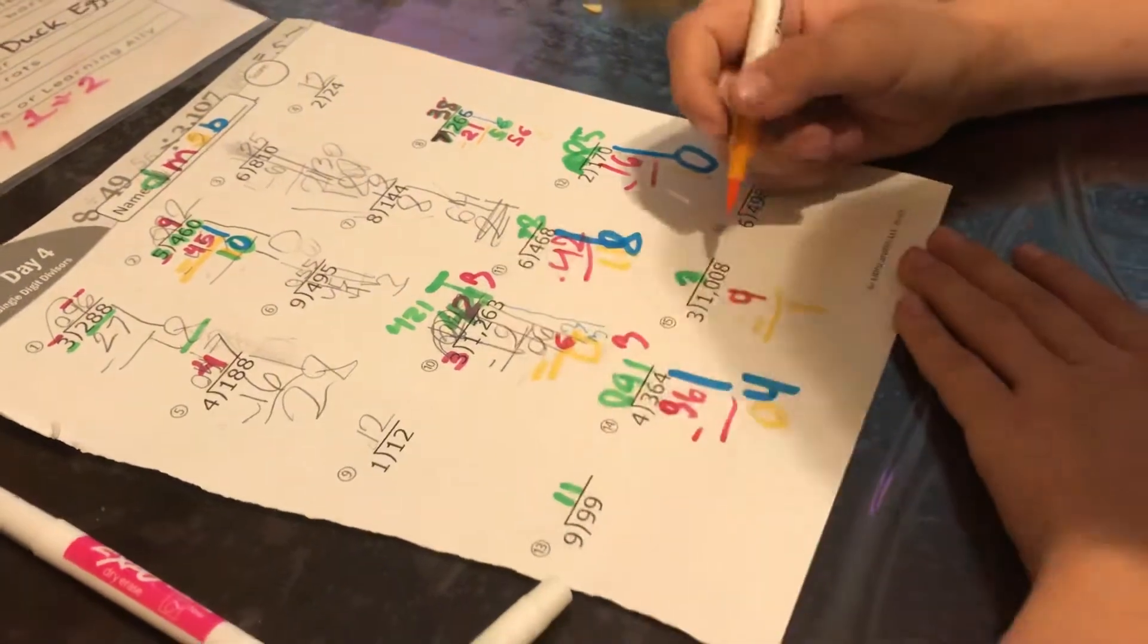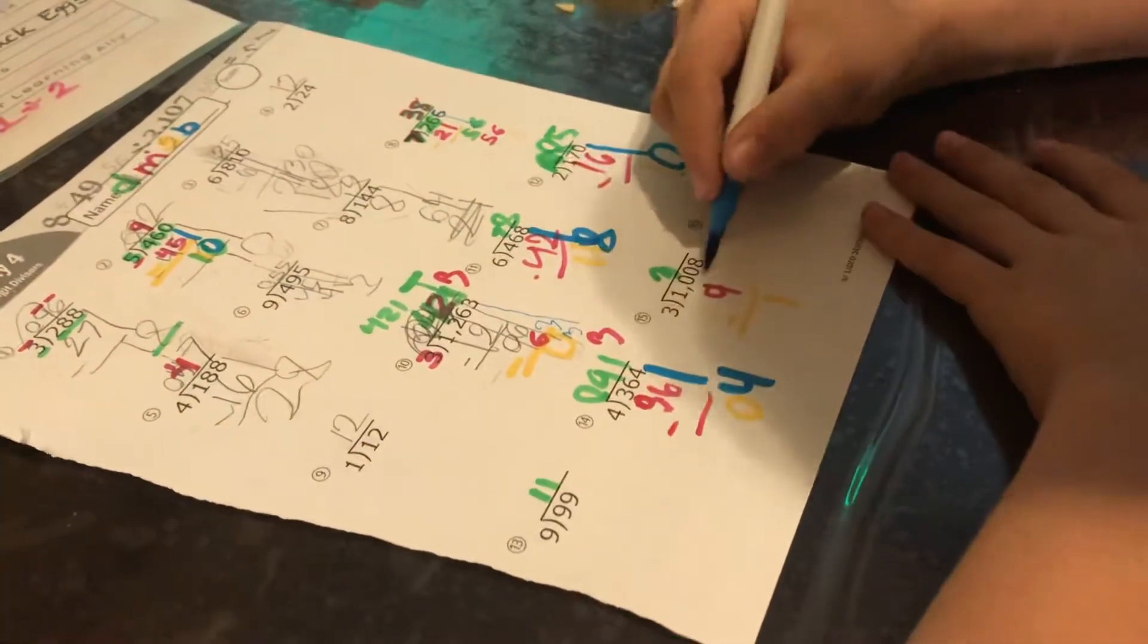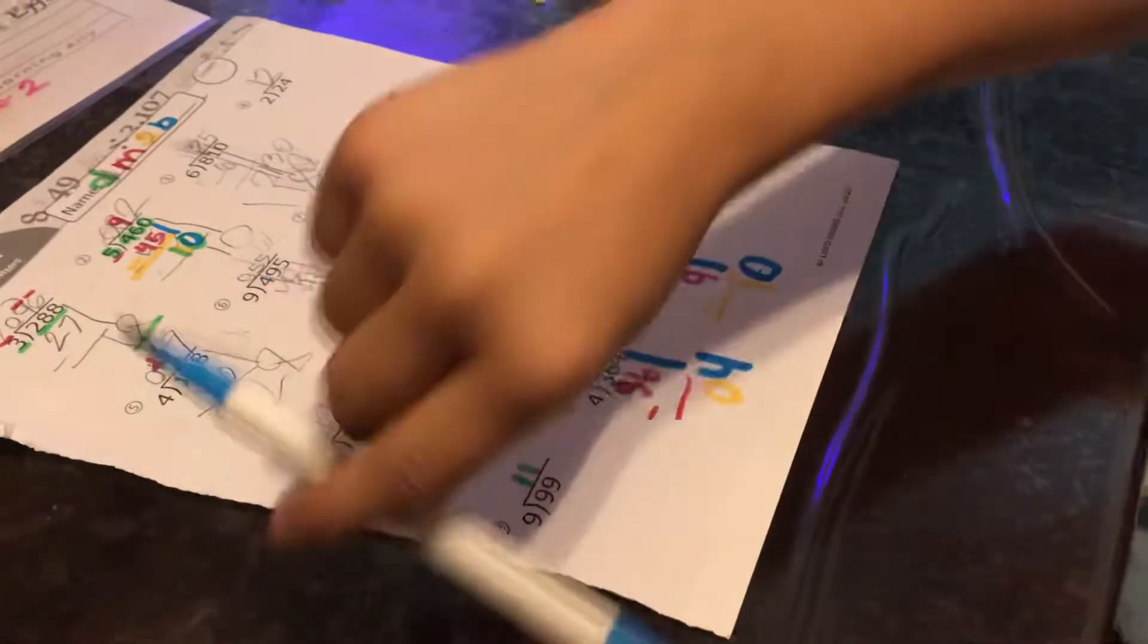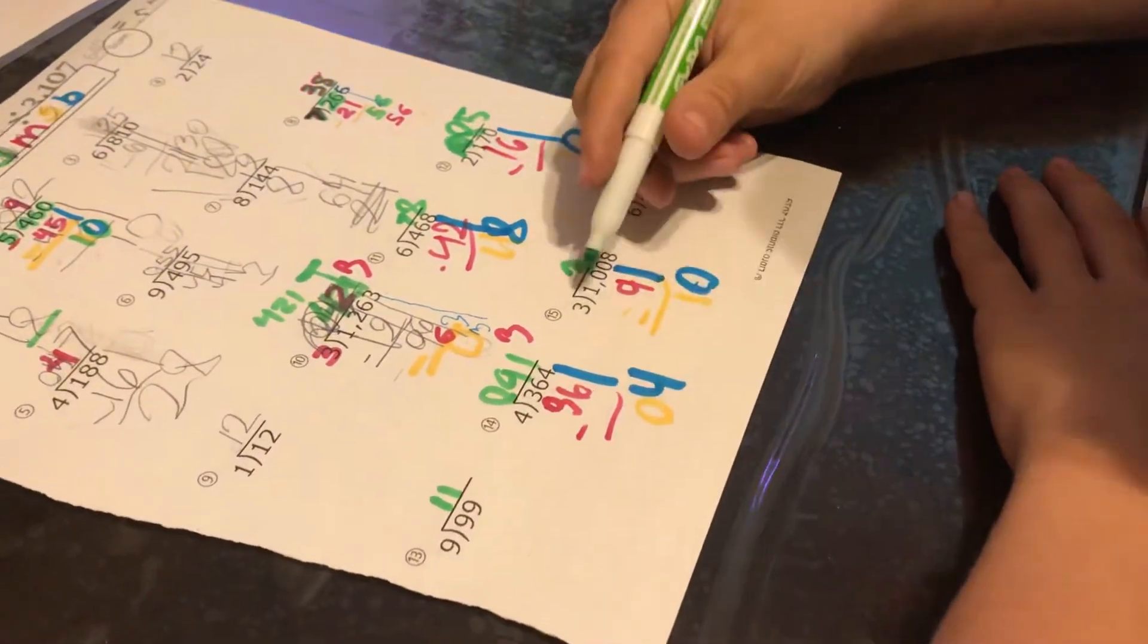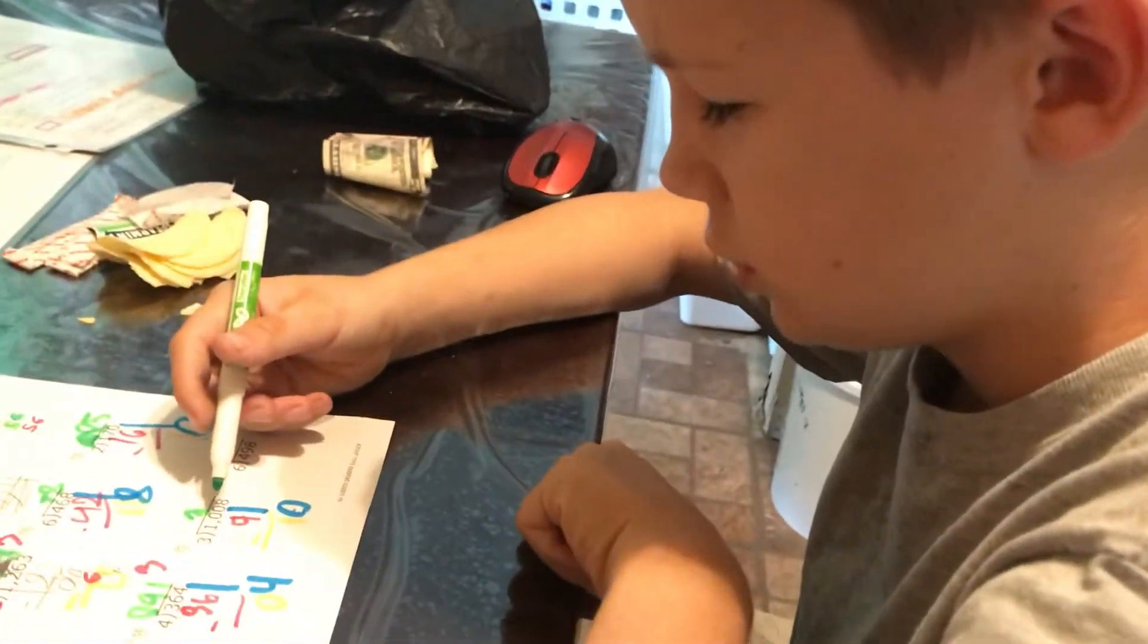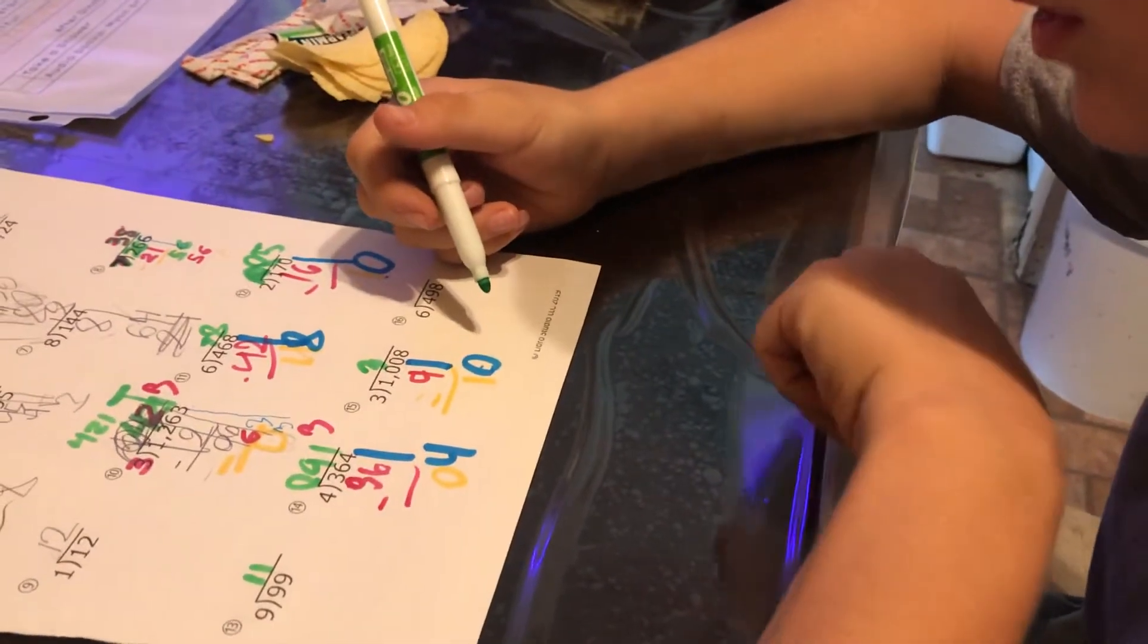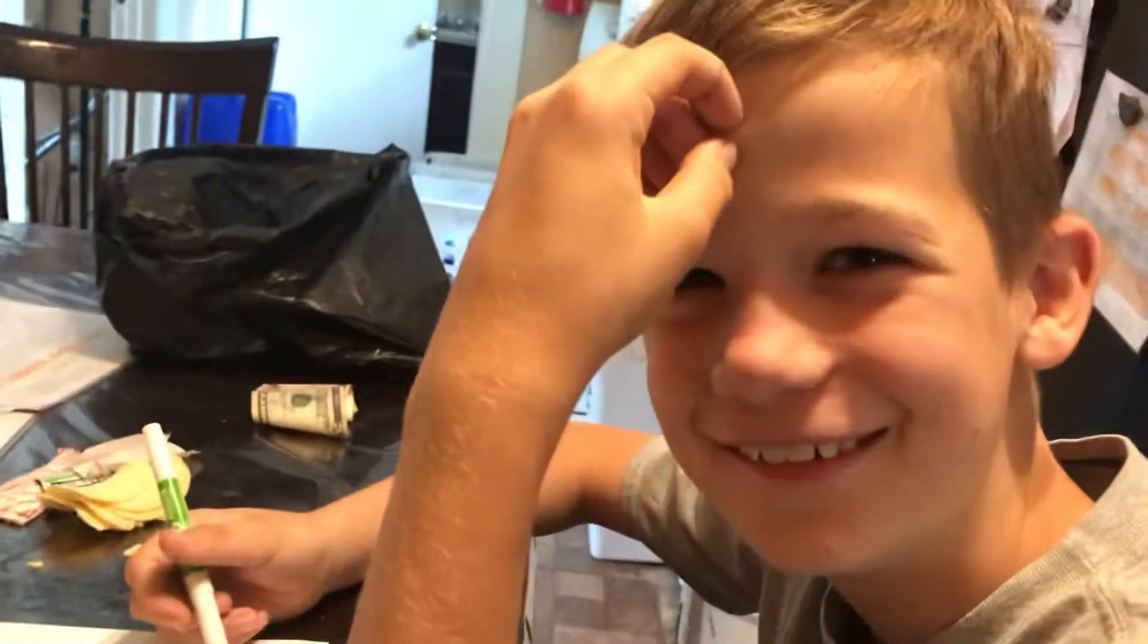And then down, gotta bring down the zero equals ten. And then you gotta divide ten divided by three. Very good, which equals eight. We already did that one. Yeah, that was the first one, so you had to do ten divided by three at the top, remember? Yeah I know, but now I forgot.